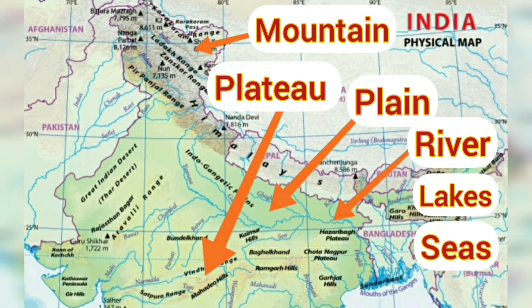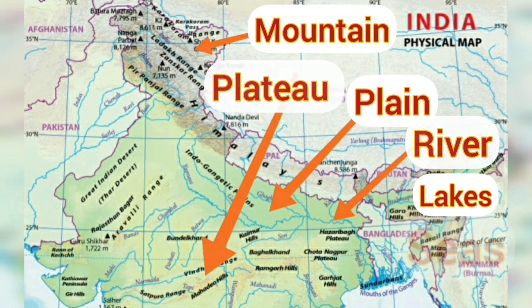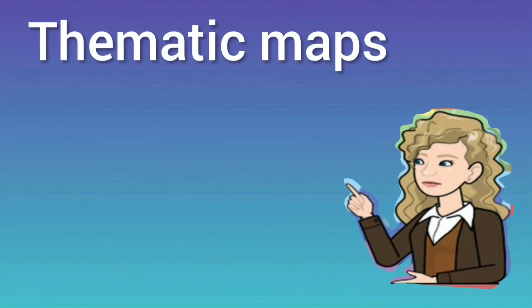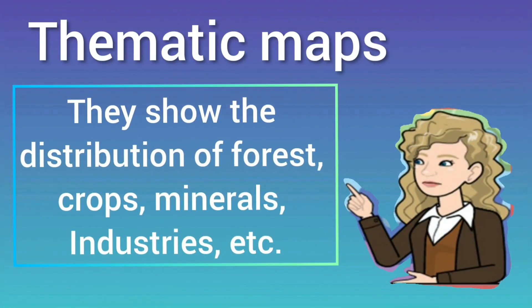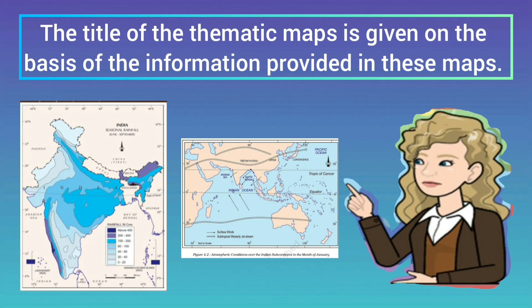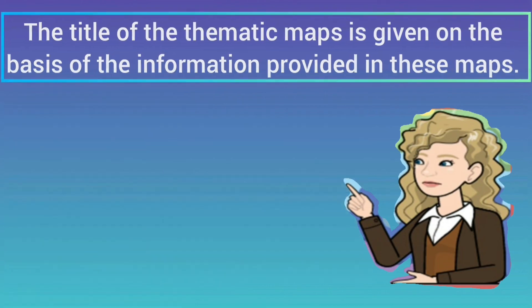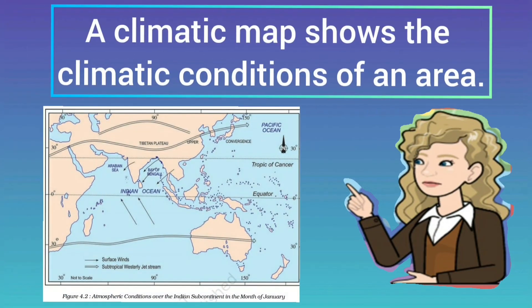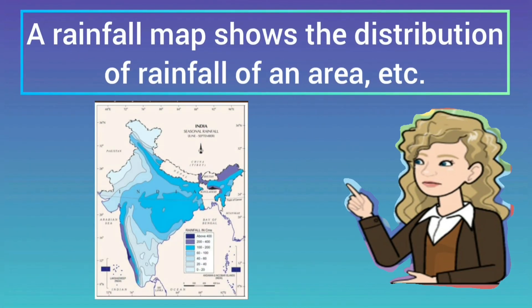Thematic maps show the distribution of forests, crops, minerals, industries, and so on. The title of a thematic map is given on the basis of the information it provides. For example, a climatic map shows the climatic conditions of an area, and a rainfall map shows the distribution of rainfall of an area.